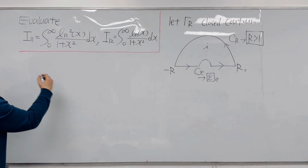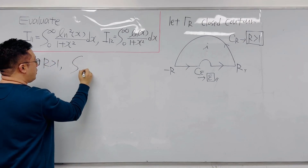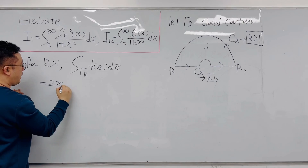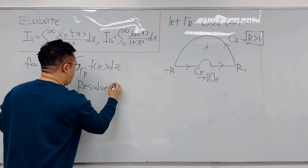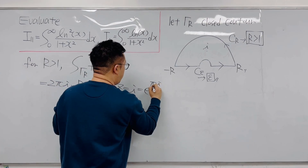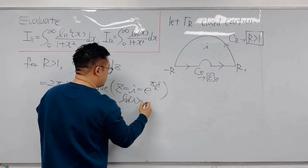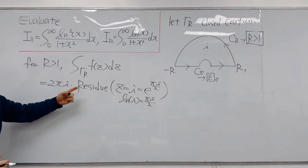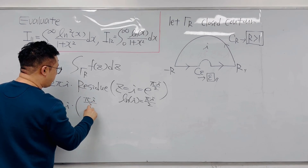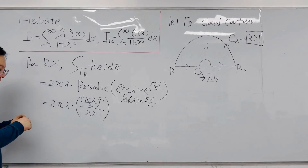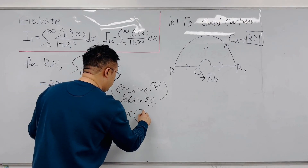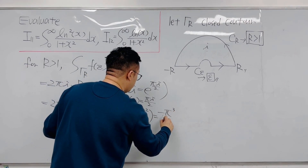For r > 1, the integral over γ_R of f(z) dz equals 2πi times the residue at z = i = e^{iπ/2}, and ln(i) = iπ/2. Calculating the residue: 2πi × (iπ/2)² / (2i) = 2πi × (−π²/4) / (2i) = −π × π²/4 = −π³/4. So the integral from −∞ to ∞ of f(x) dx equals −π³/4.